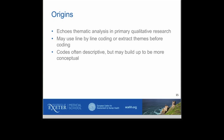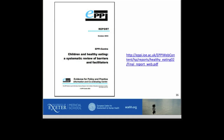The codes in a thematic synthesis are often descriptive, but depending on the team and the time and the skill, these may be built up into something more conceptually rich. I'm showing a screenshot of a report which will be the basis for this description. It was written by the EPI Centre, a UK-based evidence for policy and practice centre in London, written in 2003, about children and healthy eating — specifically a systematic review of barriers and facilitators to children eating more healthily.